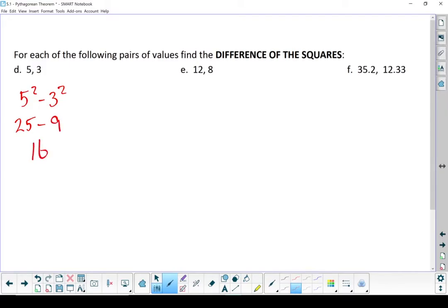I'm going to jump to the last one of this one too. We're looking at 35.2 squared minus 12.33 squared. 35.2 squared is 1,239.04, and 12.33 squared is 152.03. Subtract those two, and you get 1,087.01. That's my difference of squares.